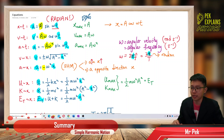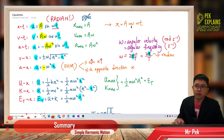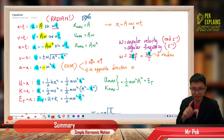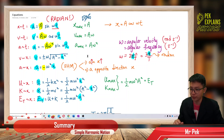Sometimes a question will give displacement as a cosine function, A cos(ωt), instead of sine. In that case you need to use differentiation to derive the velocity and acceleration equations. Differentiation is very important in this chapter, and I will show you several examples of how to differentiate.